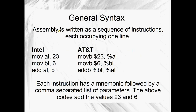So the general syntax of assembly: assembly is written as a sequence of instructions, each occupying one line. You don't tend to do complex maths expressions in brackets like you do in C++ or C-sharp. You don't make complex expressions from smaller ones in assembly - you just do one little tiny thing per line. That's pretty much how it works. From little things, big things grow - you add them all together and you get your computer to do amazing things.